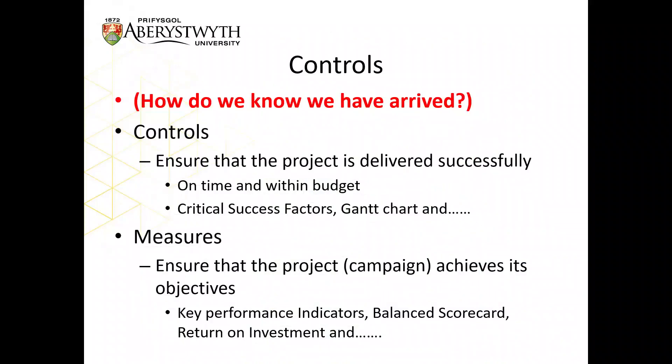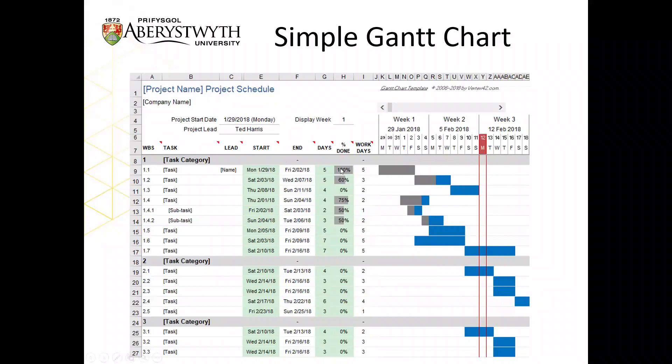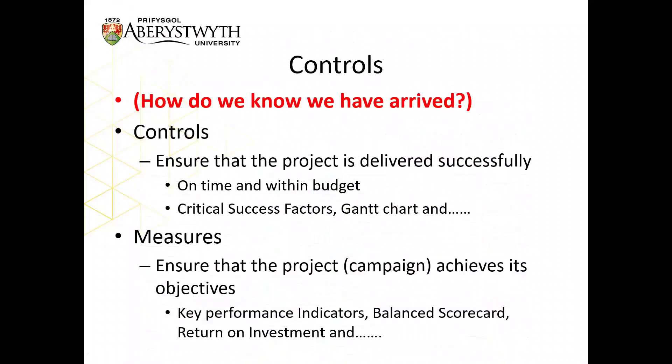Finally, we look at controls — and this is 'how do we know we've arrived' in the Wilson and Gilligan framework. Controls are split into controls and measures. Controls control the project: if we look back at the Gantt chart, this is part of the control of the project to really make sure it's working properly, going to finish on time and within budget, and we can catch it if this is not happening. We'll put our Gantt chart in place, and we'll have things called critical success factors — what do we have to do at what point — and project milestones in there as well.